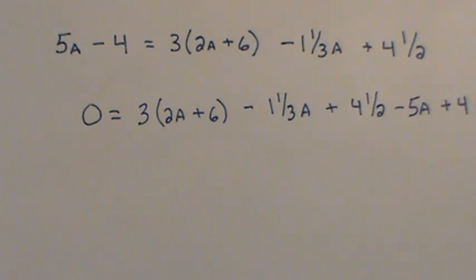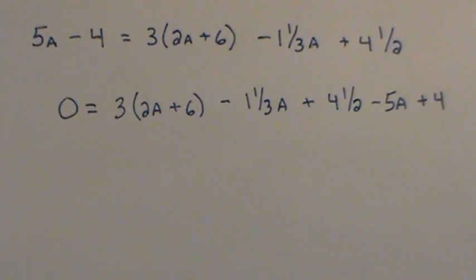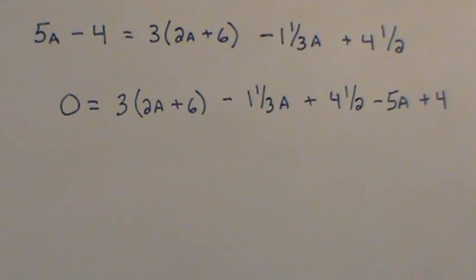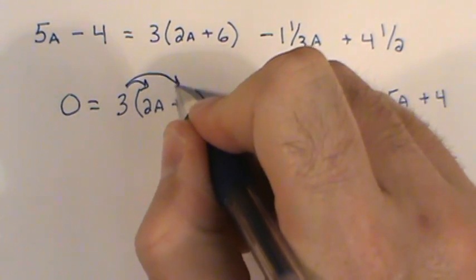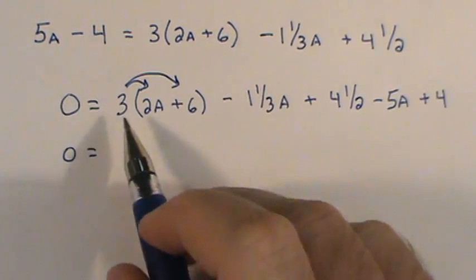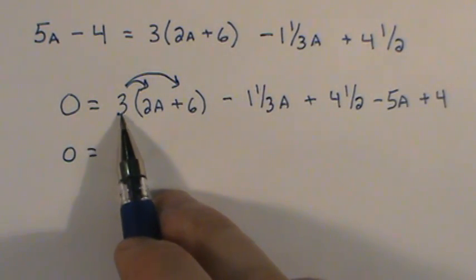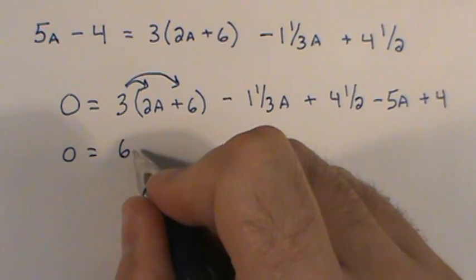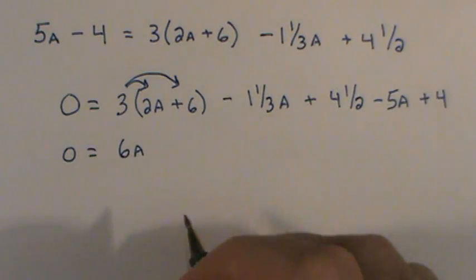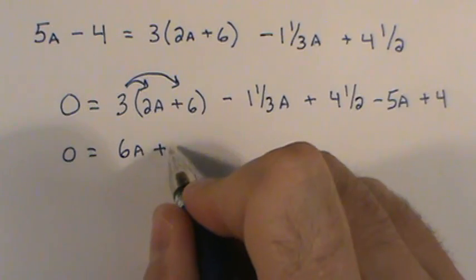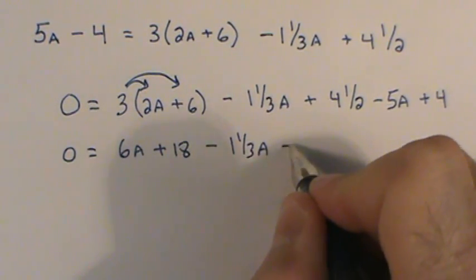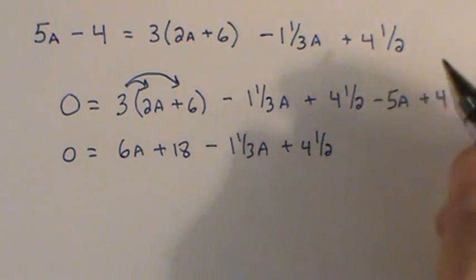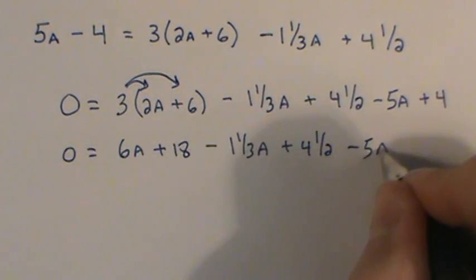Everybody will have different levels of comfort when it comes to solving these. For me, I naturally want to distribute. I want to combine some like terms. I'm probably going to go a little bit further than what you would actually have to do. So I'm just going to distribute this here. Three times 2a is 6a. Three times 6 is 18.